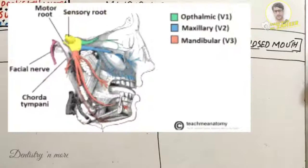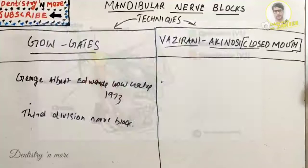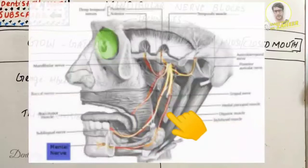The mandibular nerve has three divisions. From the main trunk before division, it gives sensory innervation to muscles such as medial pterygoid, tensor tympani, and tensor veli palatini. From the anterior division we have masseteric nerve, deep temporal nerves, buccal nerve, and lateral pterygoid nerve. The posterior division includes the auriculotemporal nerve, lingual nerve, inferior alveolar nerve, and nerve to mylohyoid.